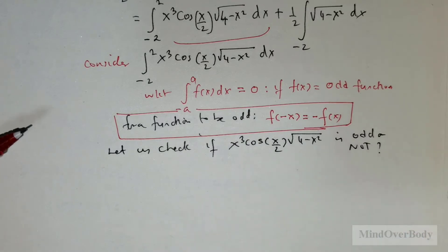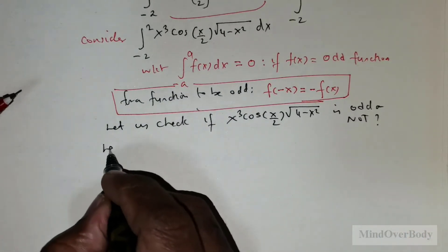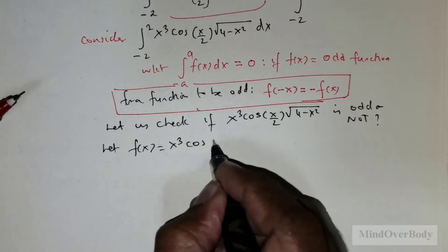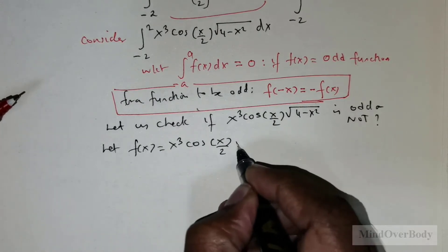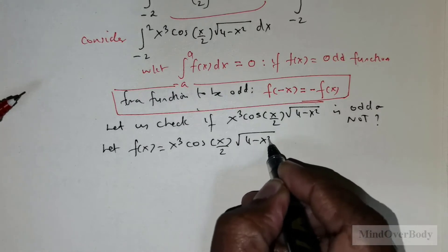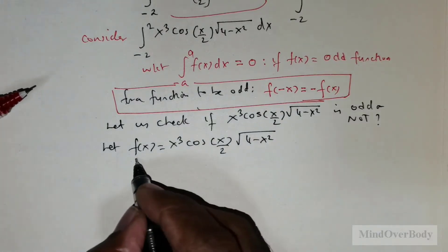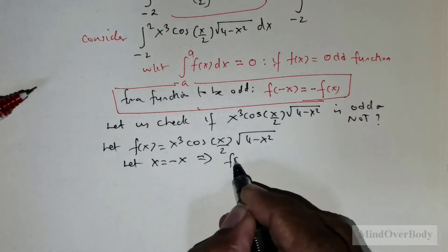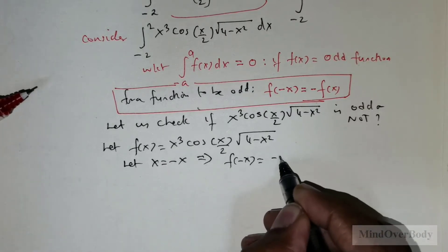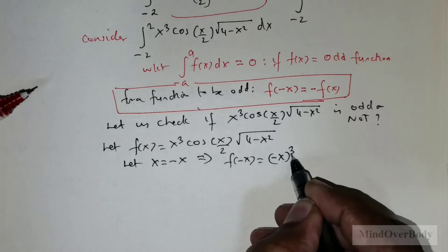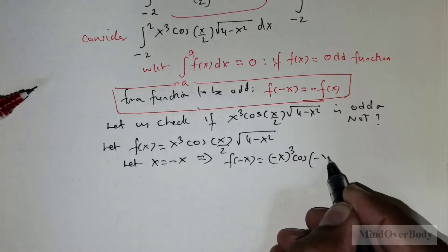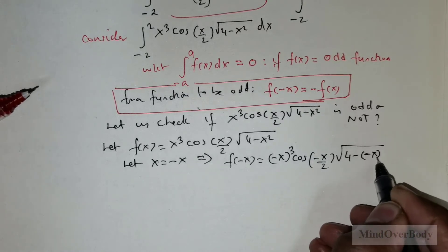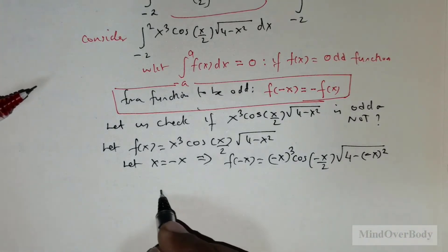For that, we take f(x) = x³ cos(x/2) √(4 - x²). This implies f(-x) = (-x)³ cos(-x/2) times √(4 - (-x)²).